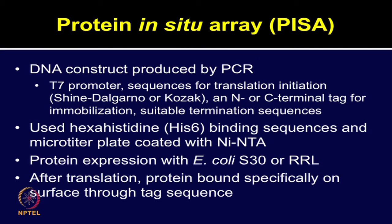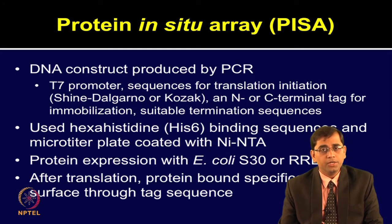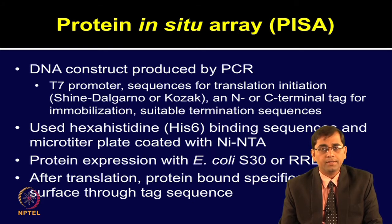In the PISA method, the DNA construct can be produced by PCR. The construct should contain a T7 promoter, sequence required for translation initiation such as Shine-Dalgarno or Kozak sequences, N- or C-terminal tag sequence required for immobilization of synthesized proteins, and suitable termination sequences. The solid surface has to be functionalized with nickel-NTA. One needs to add a histidine tag so that binding can be specific. A hexahistidine tag binding sequence and a microtiter plate coated with nickel-NTA are used for this purpose.